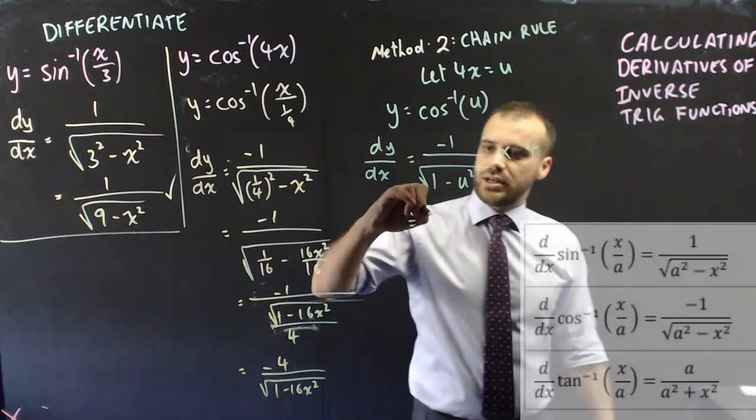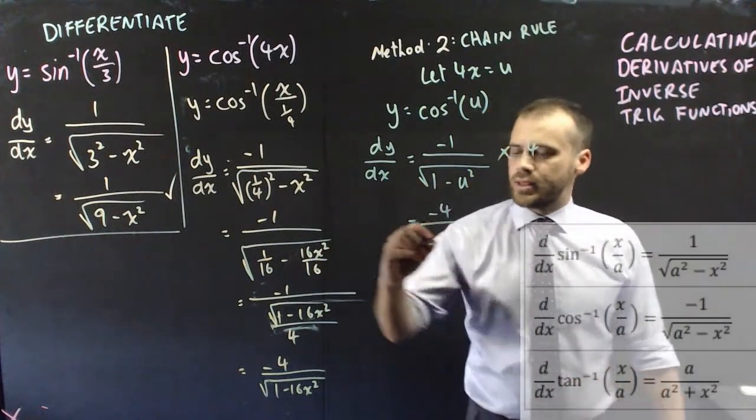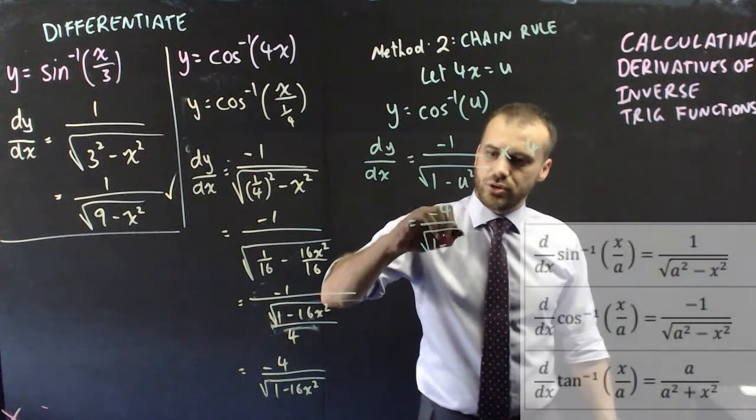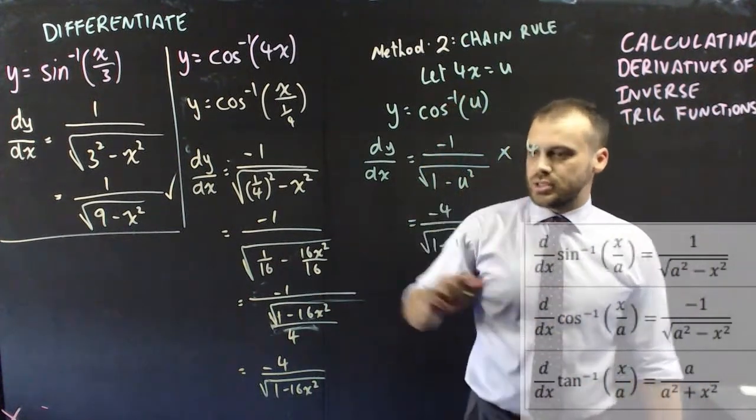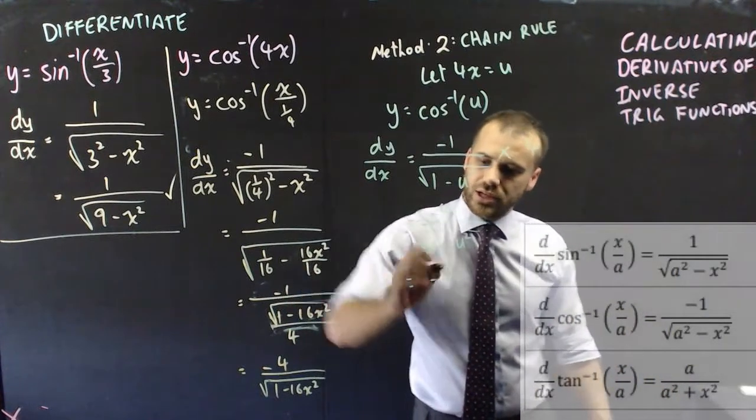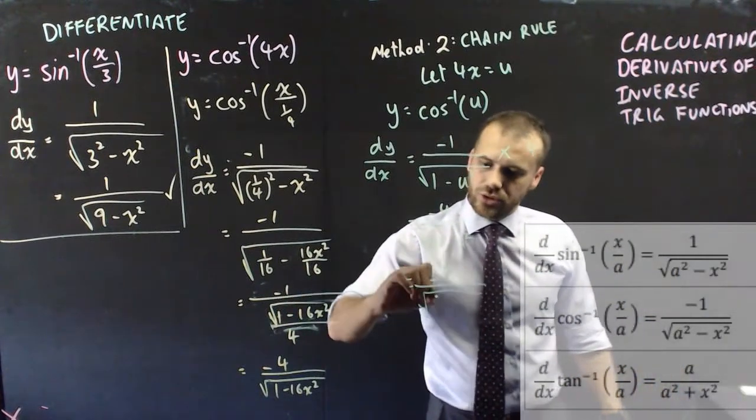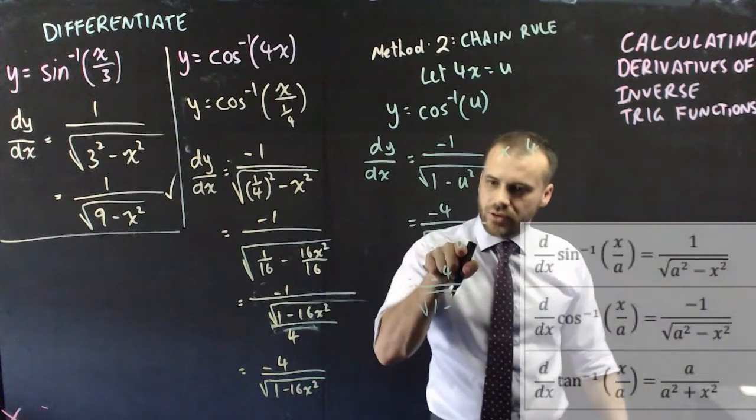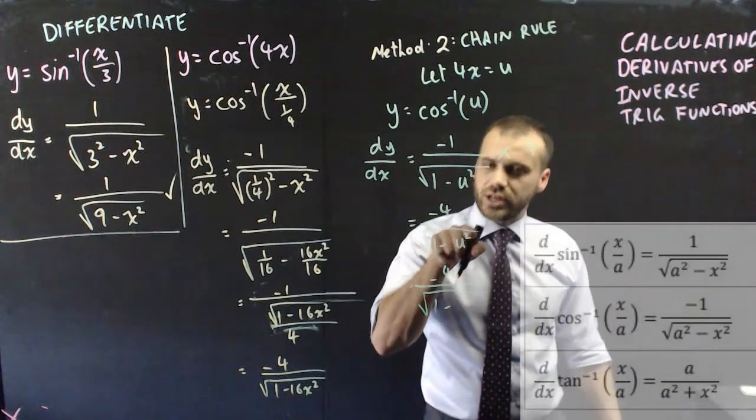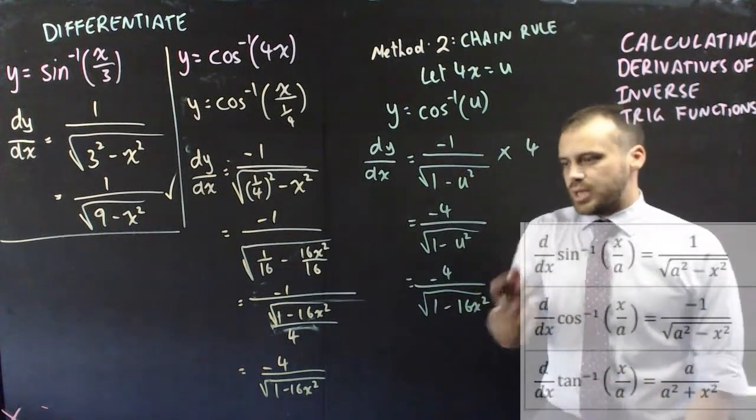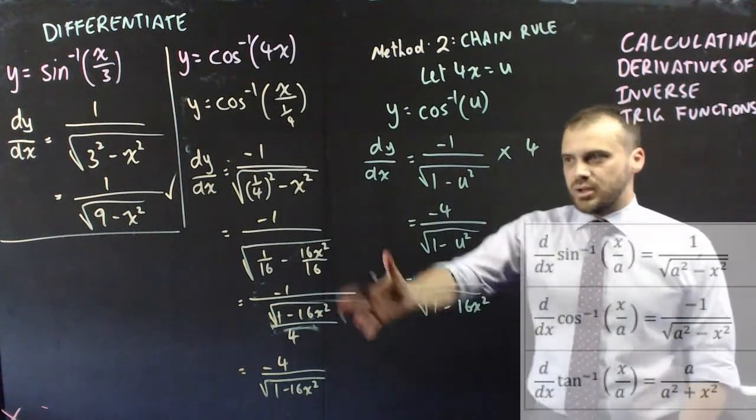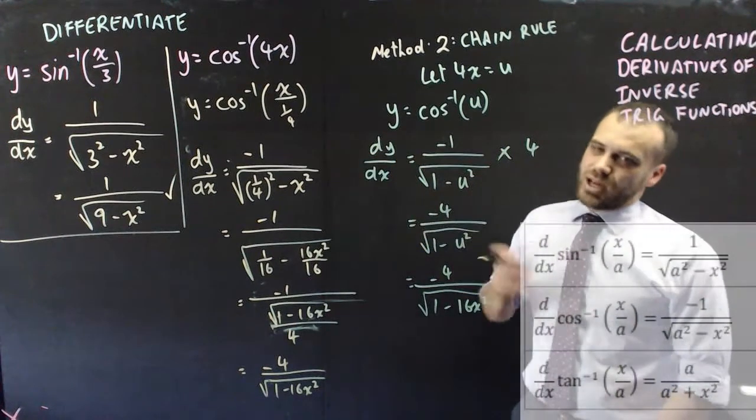Now that's going to give us negative 4 root 1 minus u squared, but we know that u is 4x. So we can now substitute negative 4 root 1 minus, if that's 4x, then 4x squared would be 16x squared. And we end up in the same spot here without getting a bit funky with our fractions.